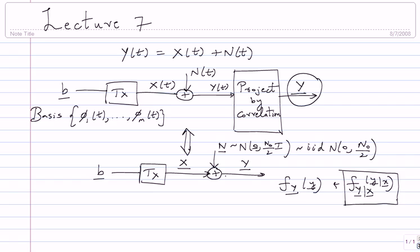For now, be convinced of this vector approach because from now on I will pretty much be completely dealing with the vector version. The vector version has a lot of useful information about the waveform version, and for decoding it is complete — there is nothing else you need. This is crucial; you should know where this is coming from.